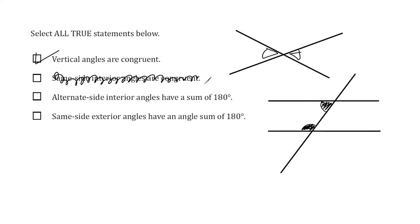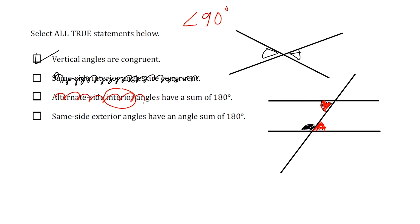Using the same diagram, the next statement says alternate interior angles have a sum of 180 degrees. Looking at the alternate interior angles, we can see they're both acute — both less than 90 degrees — so if we add them, the sum is less than 180. This is also a false statement. Alternate interior angles are actually congruent to each other — they are equal to each other.